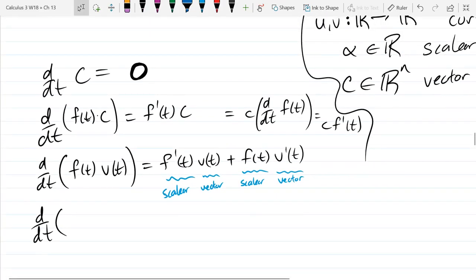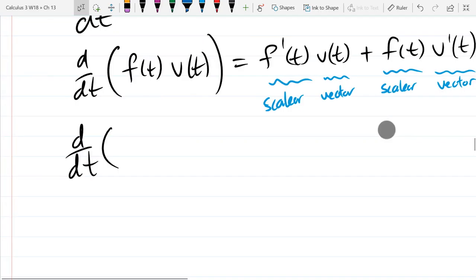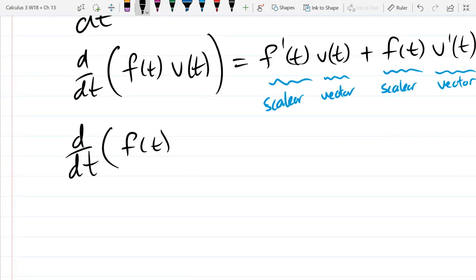So we're going to have the sum. Why would this not make any sense? Why does that not make any sense? Is it a function and a vector? So we've got a real function and a vector. So we can't add those two together.